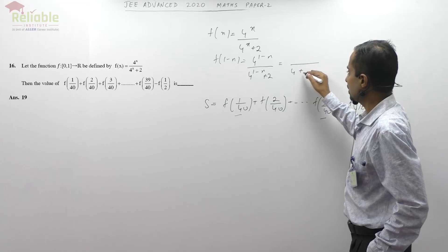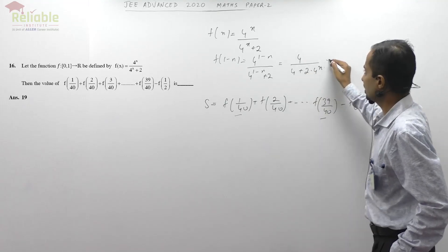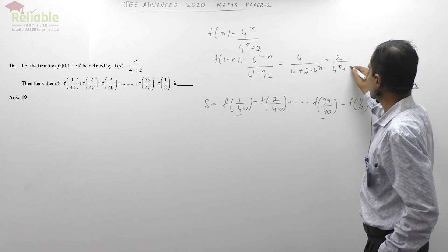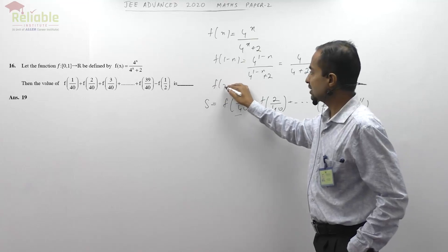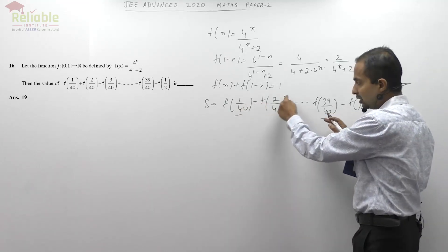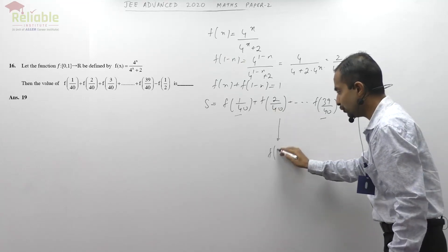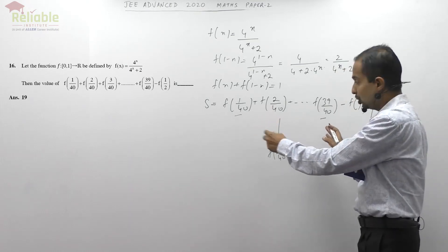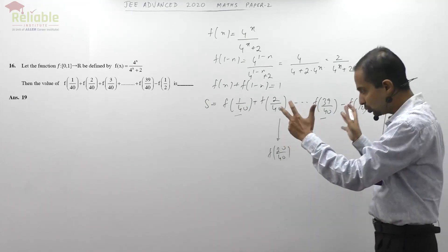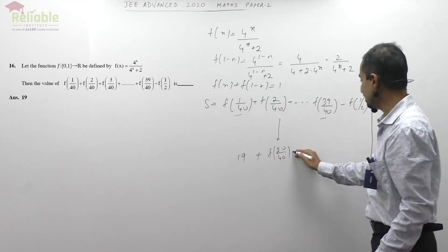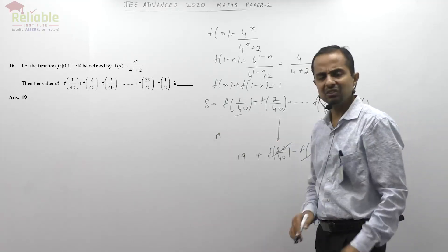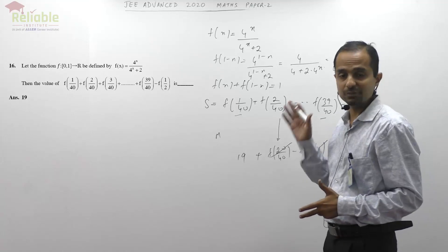Simplifying: f(x) = 4^x / (4^x + 2), which equals 2/(4^x + 2). So f(x) + f(1-x) = 1. We have 39 terms, pairing symmetrically around 20/40 = 1/2. Barring f(20/40) = f(1/2), the remaining 38 terms form 19 pairs each summing to 1. So the total sum is 19 + f(1/2), and subtracting f(1/2) gives 19.